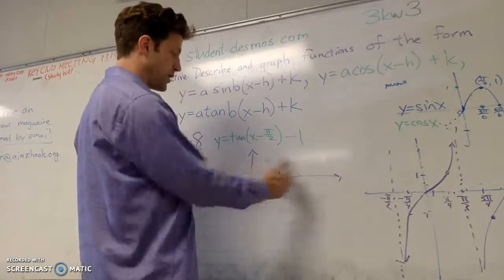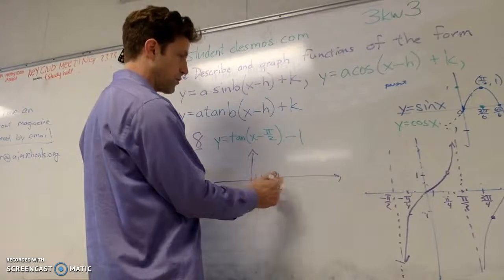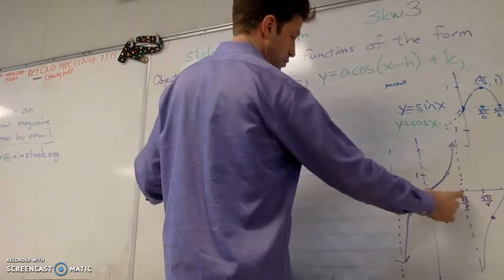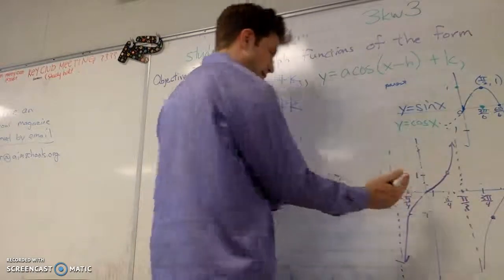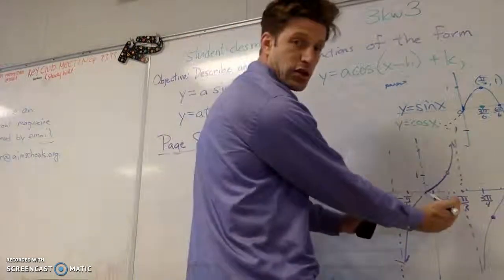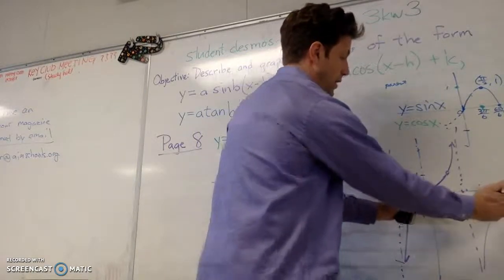And since my period is still pi, here my period was pi, but my asymptotes were pi over 2 and negative pi over 2. So now, basically, that whole thing, that whole situation, is moving that much. So now my asymptotes are at 0 and pi.